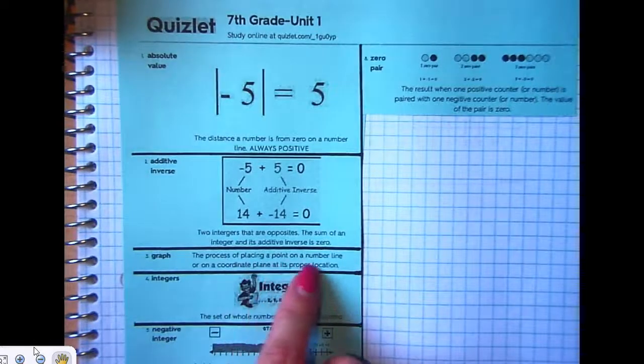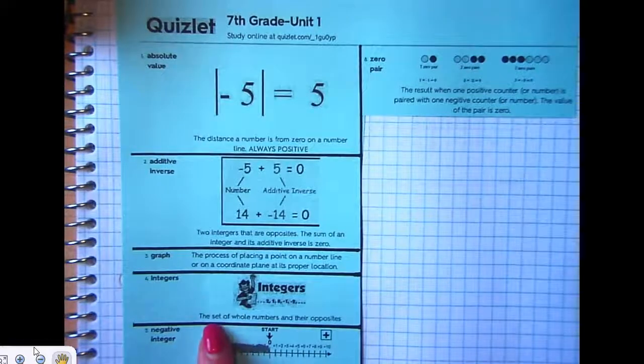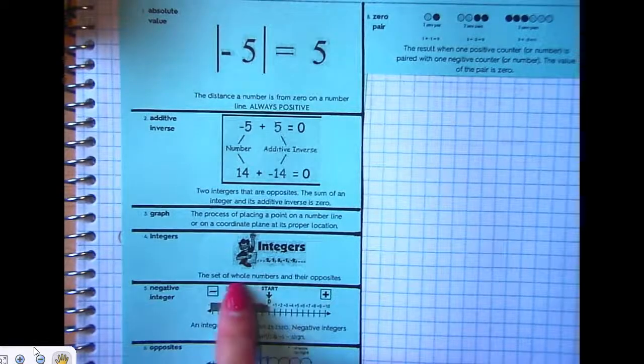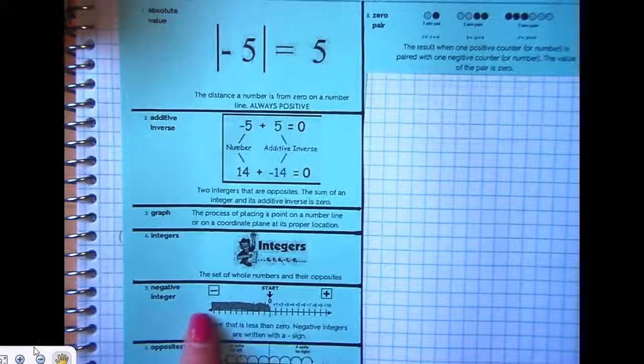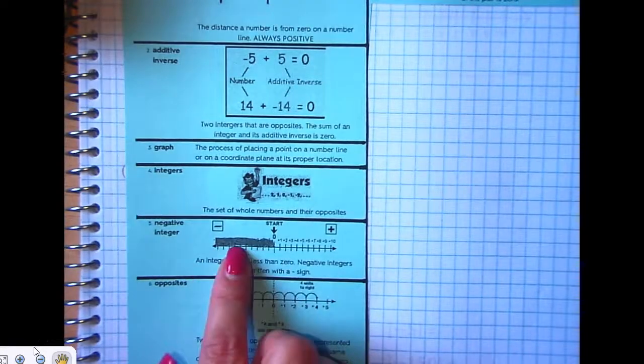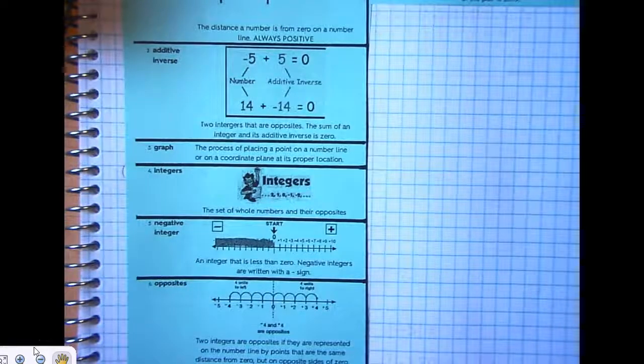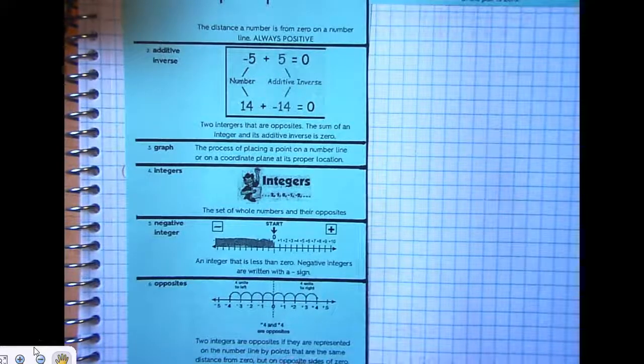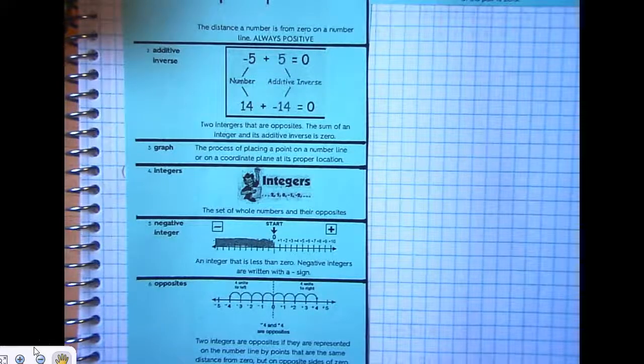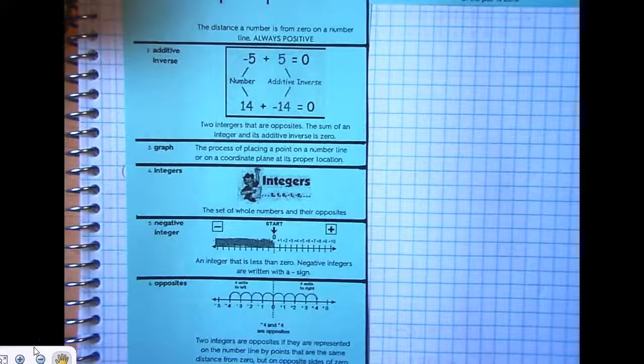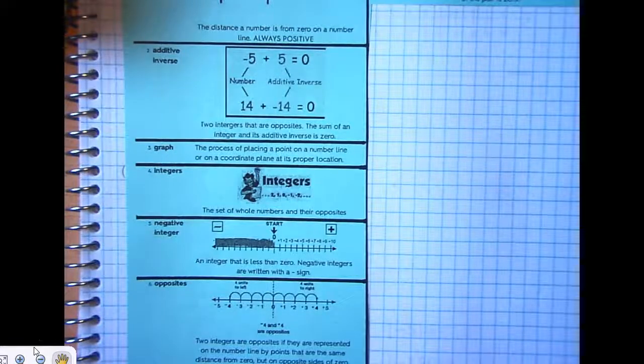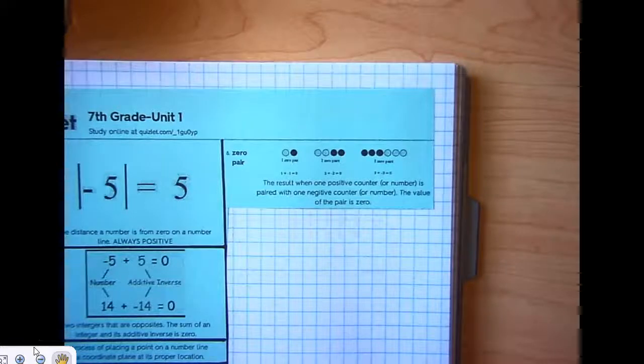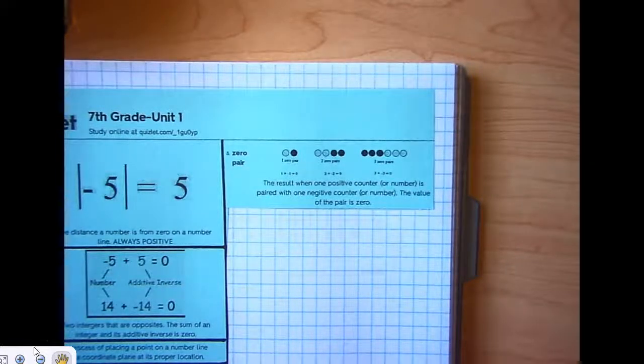Graph is the process of placing a point on a number line or on a coordinate plane. Integers, the set of whole numbers and their opposites. Integers do not include fractions and decimals. A negative integer is all numbers less than 0, to the left of 0. Opposites. Two integers are opposites if they are represented on the number line by points that are the same distance from 0 but on opposite sides of 0. A positive integer is an integer that is greater than 0. And the last one is zero pair. The result when a positive counter or number is paired with one negative counter or number. The value of the pair is 0.